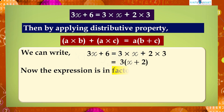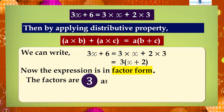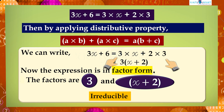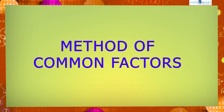Now we get the given expression in factor form, and the factors are 3 and (x+2), which are irreducible. Here we have done this by taking the common factor among the terms, so this factorization is done by the method of common factors.